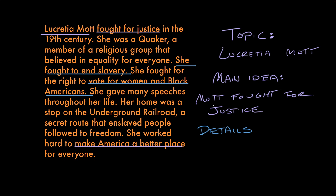Final detail: her home was a stop on the Underground Railroad, a secret route that enslaved people followed to freedom. That's taking action to help people become free — that sounds pretty justice-friendly to me. Nice work. We've found a lot of details in the text that support the author's main idea.